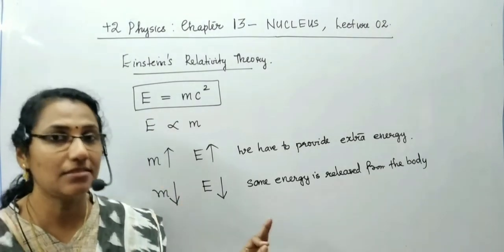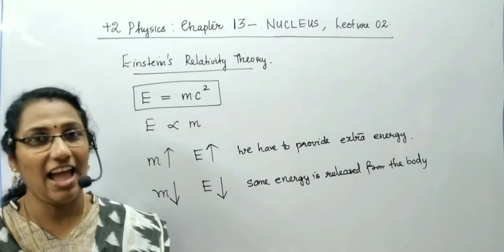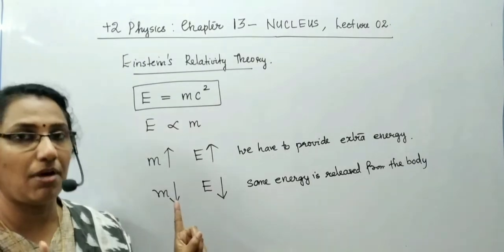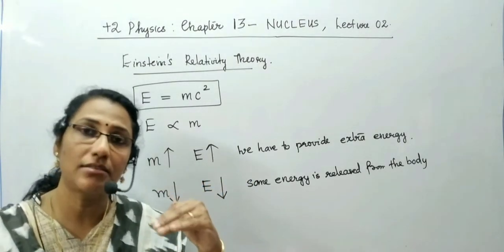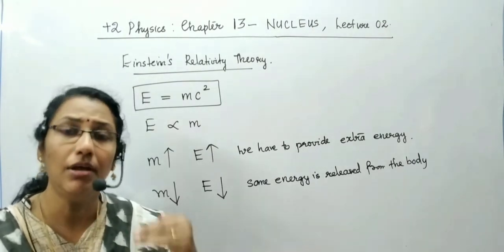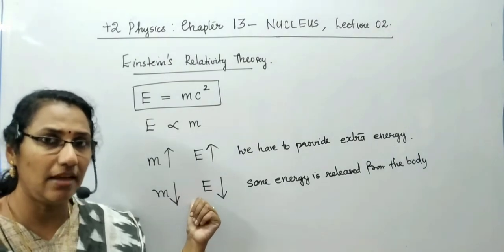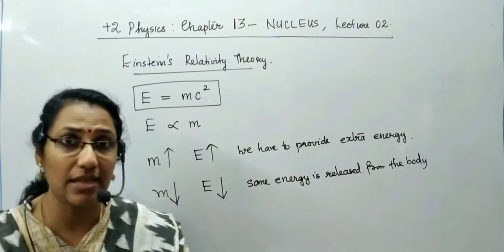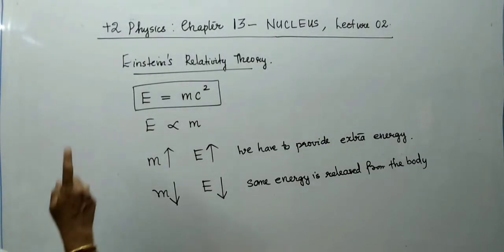Only by understanding this concept, we will go to the topic called mass defect and binding energy in our chapter — the nucleus. In order to discuss the mass defect of the nucleus, we need to understand that on decreasing the mass of a body, the energy must also decrease. When mass decreases, energy decreases, and in order to decrease the energy of a system, some energy must be released from that system.